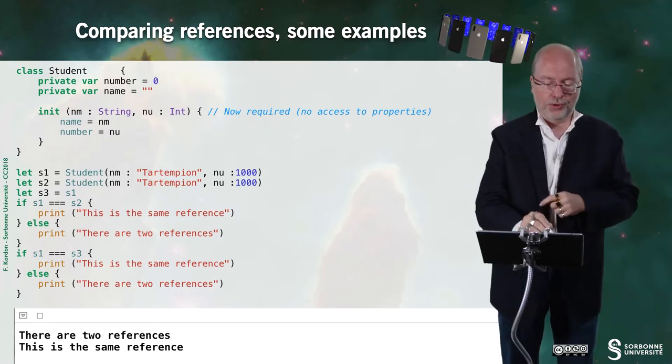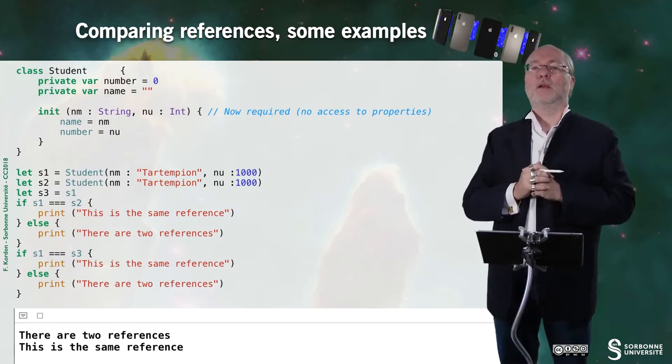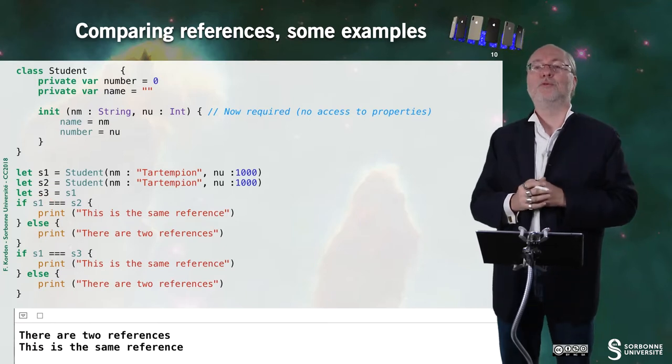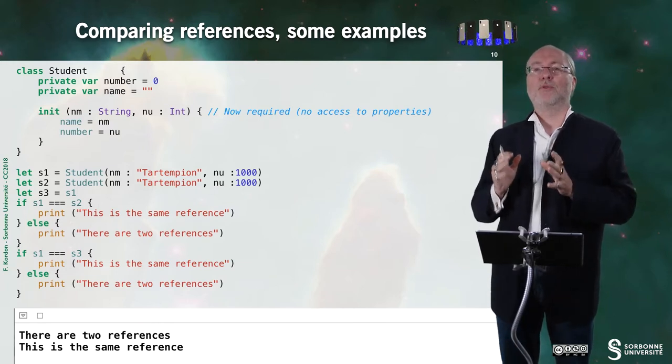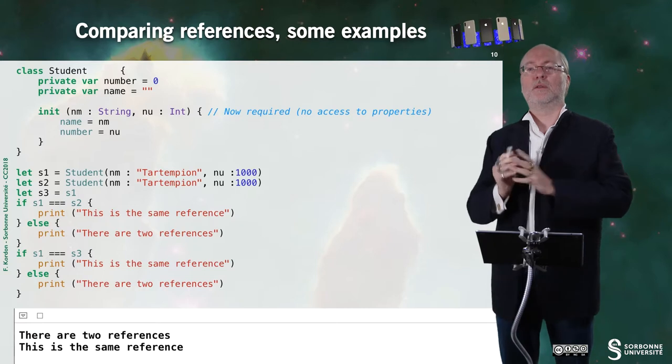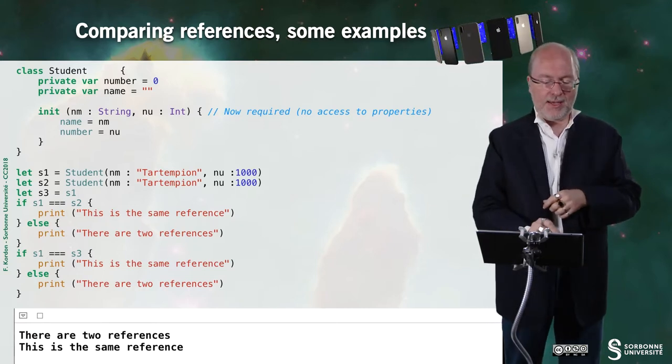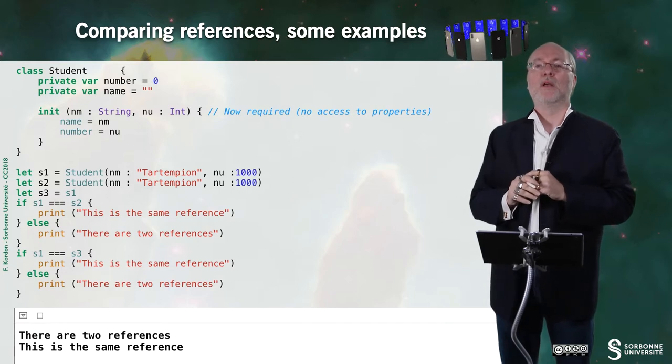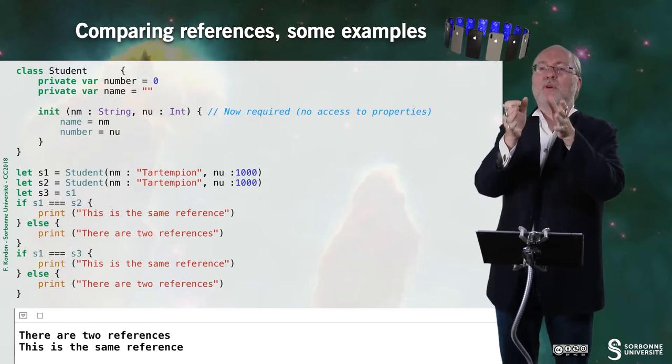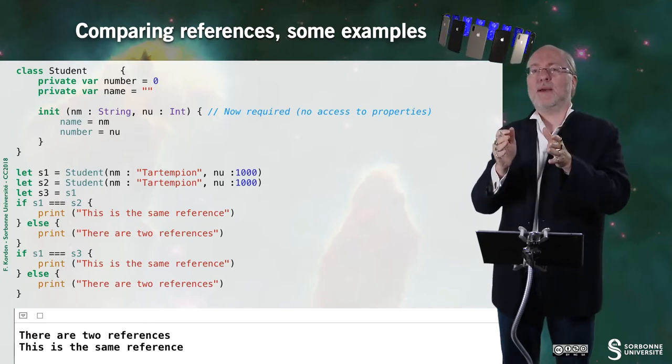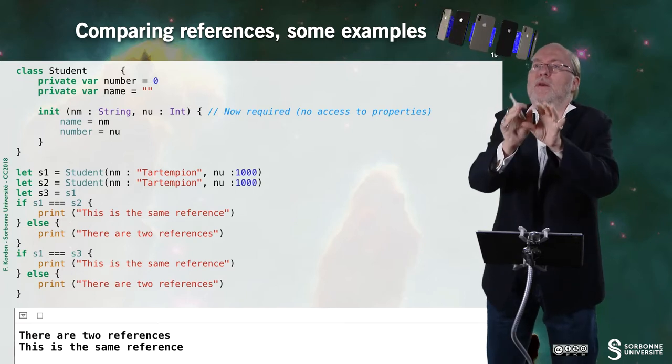Here I create a little student. So I have three variables, student 1, 2, and 3. Student 1 and 2, they have exactly the same value. So they are both Tartempion with number 1000. And then S3 is equal to S1. So you see that I have two different objects. Some memory space for S1. Some memory space that is different for S2. With the same value as the memory space for S1. And then S3 is a reference to the same space as S1.